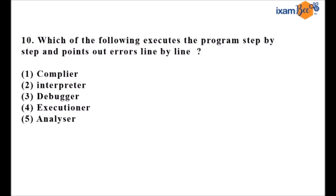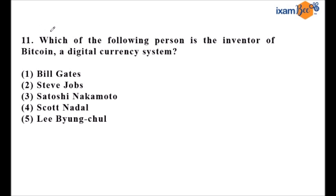Question ten asks: which of the following executes the program step by step and points out errors line by line? The answer is interpreter. A compiler does it all at once, whereas an interpreter processes it line by line. Students can find this on page 38 of the provided PDF.